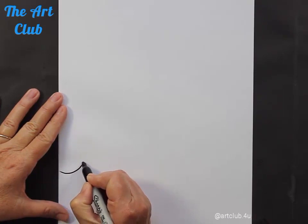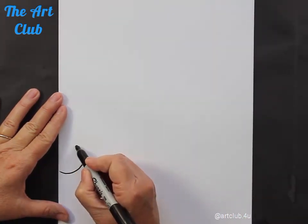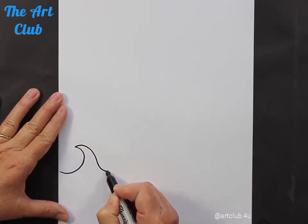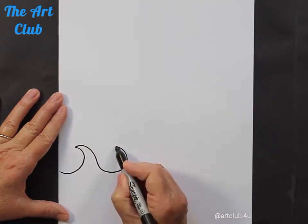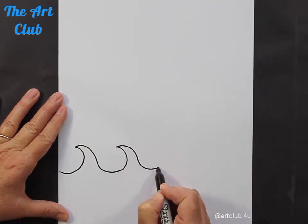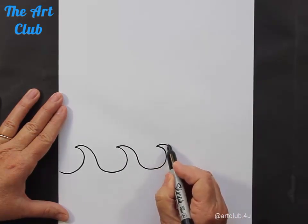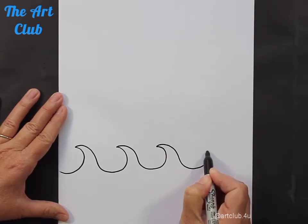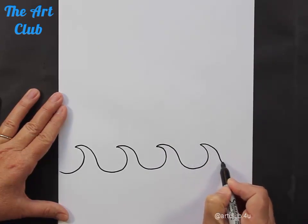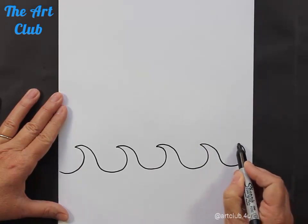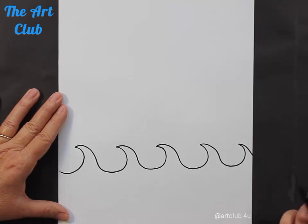This is how you make a wave: you make a curved line like this and then you make another curved line that comes down, and then you repeat this pattern. It is kind of tricky, so you might want to practice this a little bit before you start your final drawing. This is the ocean, the ocean waves.